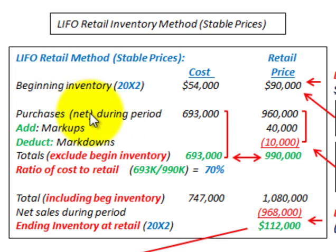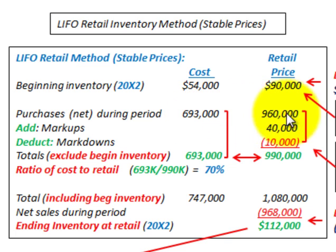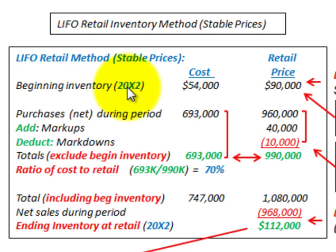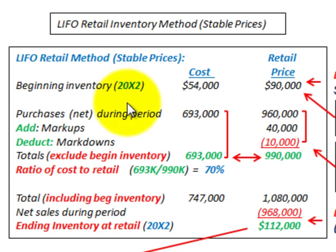We start out with our purchases during the period. We have a cost in those purchases — that's what we paid for them — and then a retail price, which is what we charge customers. We also have some beginning inventory, the carryover from year 20x1 that becomes beginning inventory in 20x2. Using this LIFO retail method, we aren't going to include that beginning inventory when we calculate our ratio of cost to retail.